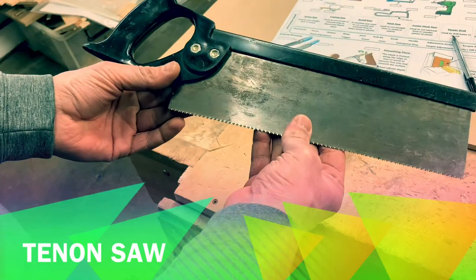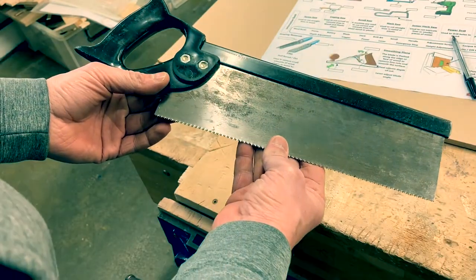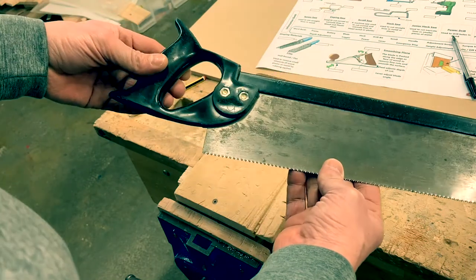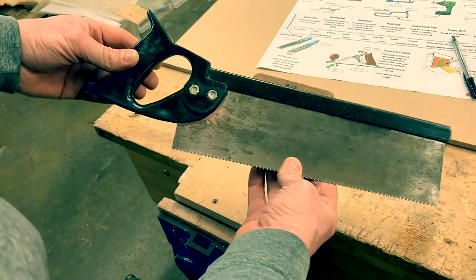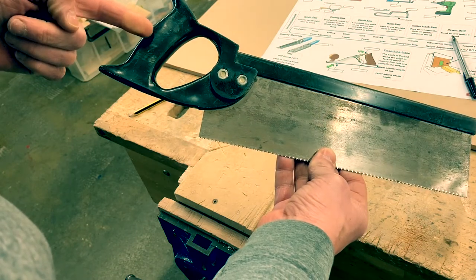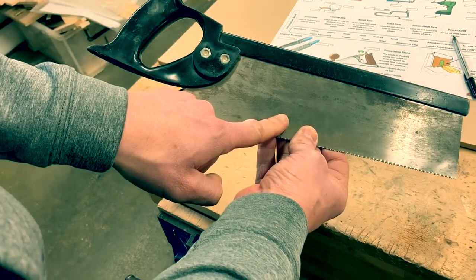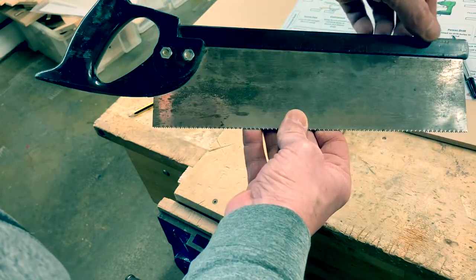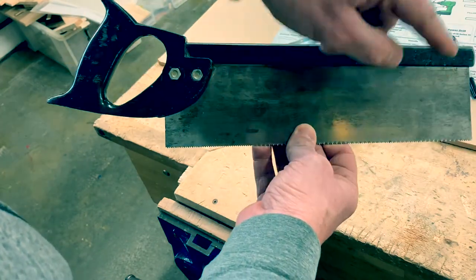The first tool we're going to be looking at is what we call a tenon saw, T-E-N-O-N. And this saw is designed for working with wood, and it's designed to cut straight lines in wood. It's got a handle, it's got a blade, and along the back here, traditionally, it would be a brass bat to keep the saw blade straight.